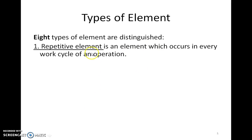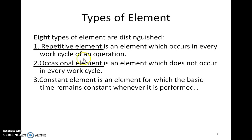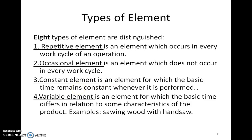There are eight types of elements. A repetitive element is an element which occurs in every work cycle of the operation. An occasional element is one which does not occur in every work cycle — for example, counting of parts is done only once in a bundle. A constant element is an element for which the basic time remains constant whenever it is performed.